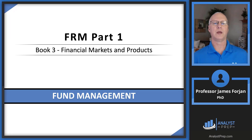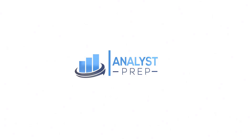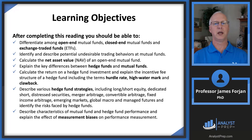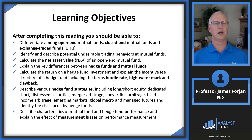This is FRM Part 1, Book 3, Financial Markets and Products, and the chapter on Fund Management. The learning objectives for this chapter: we're going to differentiate between open-ended and closed-ended mutual funds, including ETFs. We'll look at differences between hedge funds and mutual funds, the net asset value for an open-ended fund, and we'll calculate the return on a hedge fund including fee structure considerations. We'll discuss various hedge fund strategies, and then end with a discussion on survivorship bias.